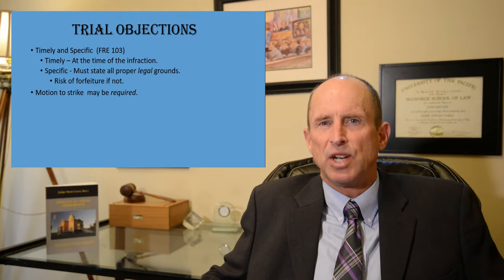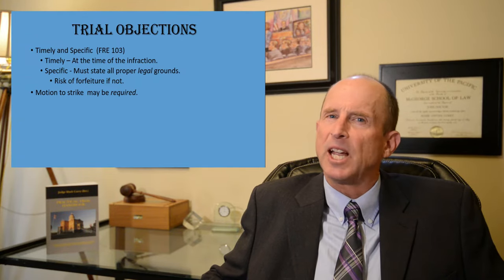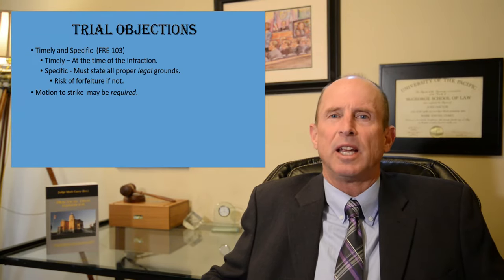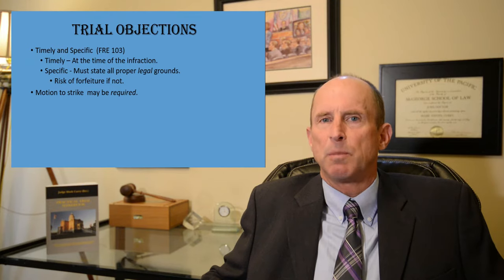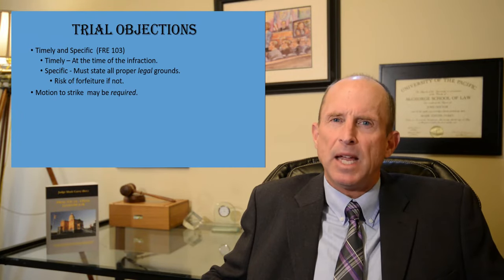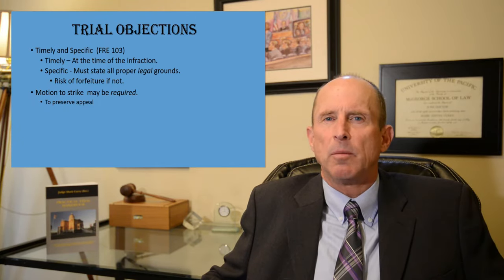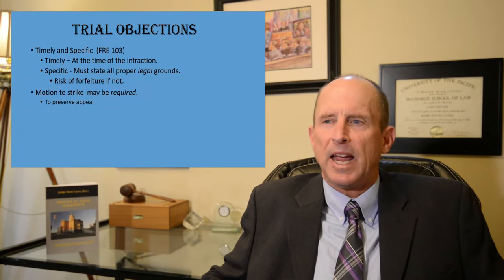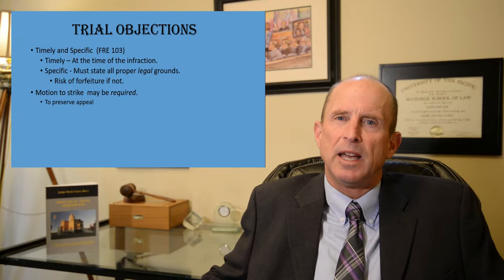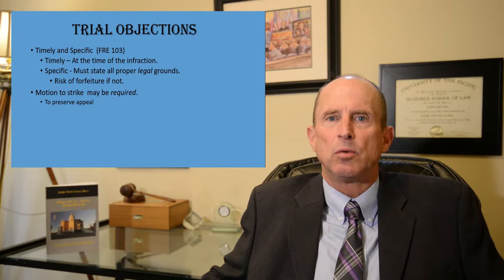To make a timely objection, the best case is you've objected prior to the witness answering — that requires you're paying attention and acting almost instantly. If you fail to make a motion to strike in some jurisdictions, the answer stays on the record because there's been no formal order by the court to remove it. It could potentially forfeit your ability to have an appeal later on if you believe the judge's ruling was incorrect.